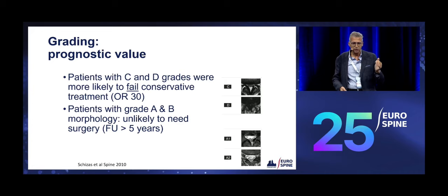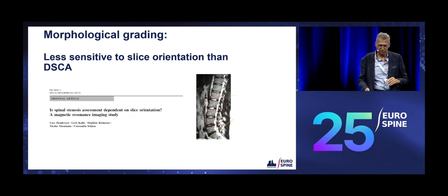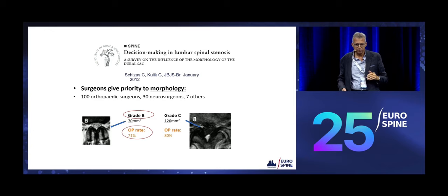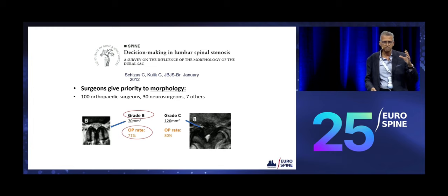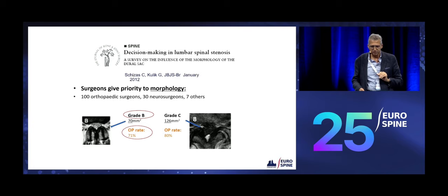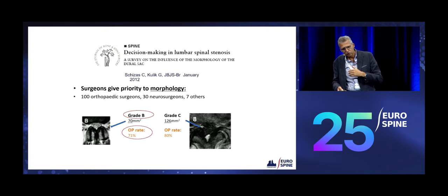Patients who had Grade A's and B's who didn't have surgery for five years were unlikely to need surgery during that follow-up period. Also, the grading is less sensitive to orientation, so you can grade very easily without any measuring tool. We also did a survey and found that most surgeons actually did think of morphology and didn't focus on how many millimetres the sac was measuring. Interestingly, most surgeons in Europe would operate on Grade B's — 71% in theory would, which is not exactly what we do in our unit.